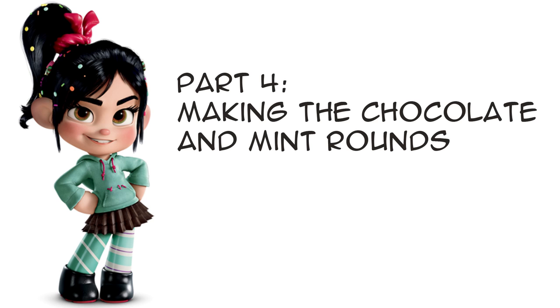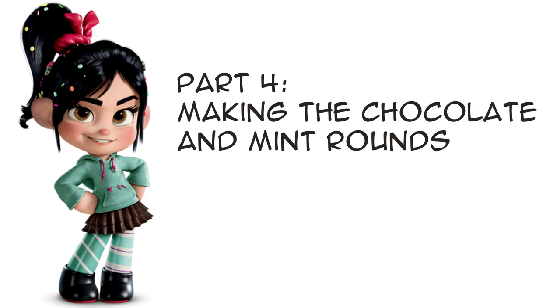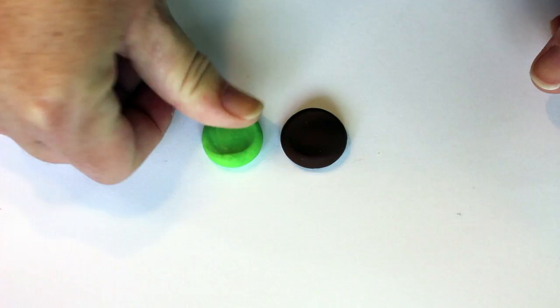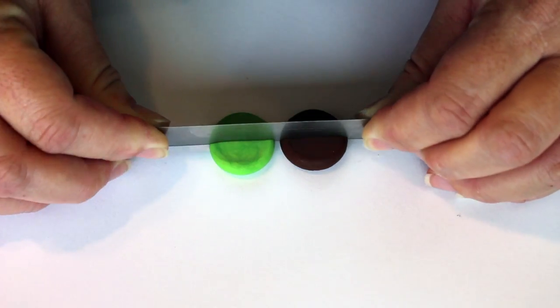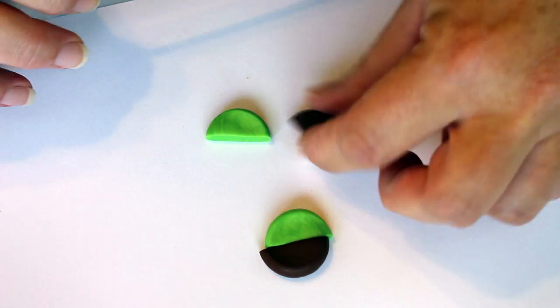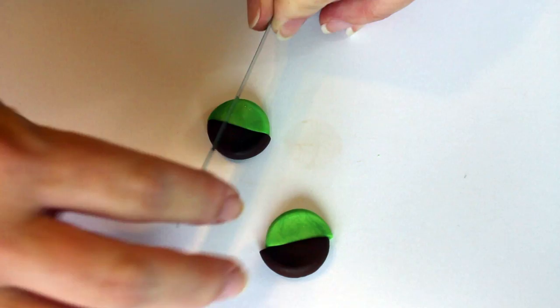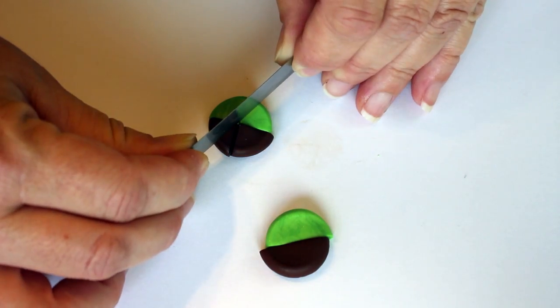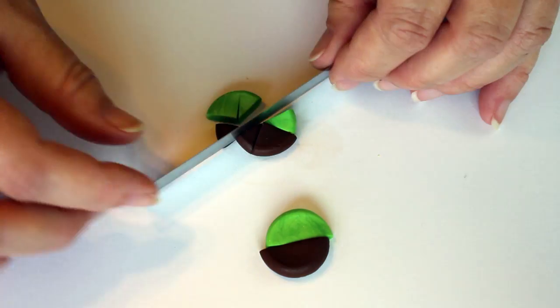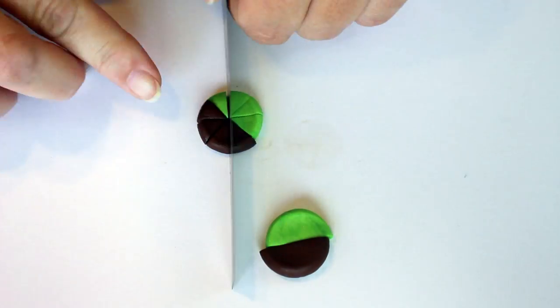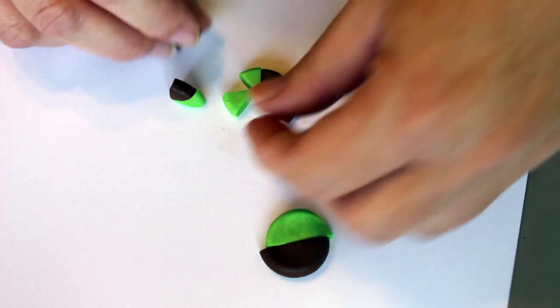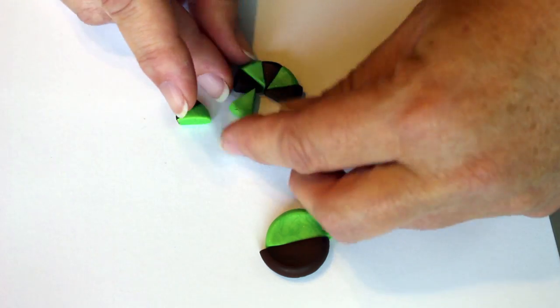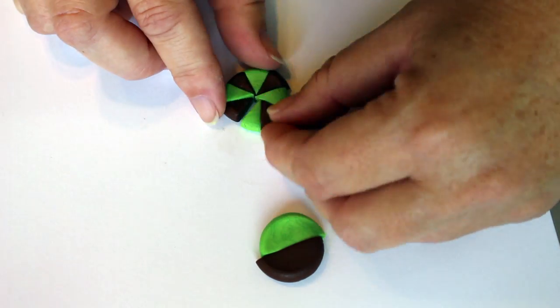Part 4: Making the Chocolate and Mint Rounds. Start with a ball of brown and a ball of green clay. Flatten both to the same width and height. Cut the circles in half and make two candies, half brown, half green. Cut the candy diagonally three equal times. Interchange every green triangle with a brown triangle.